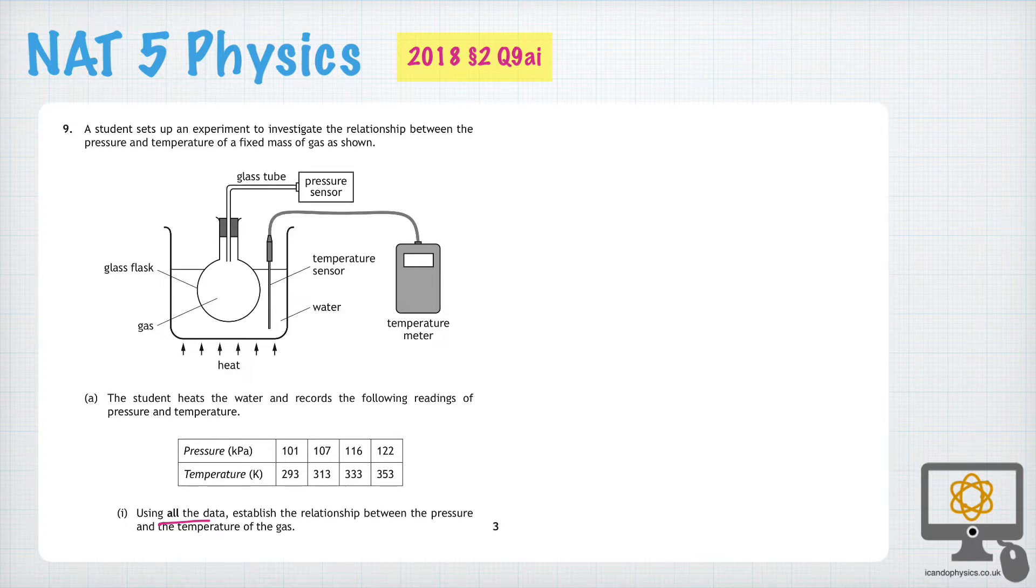The first thing we need to know is what is the relationship between pressure and temperature. According to the formula sheet, P1 over T1 equals P2 over T2. That essentially says that pressure over temperature is a constant value.